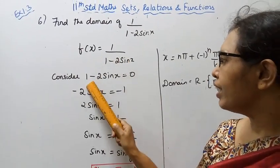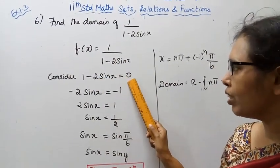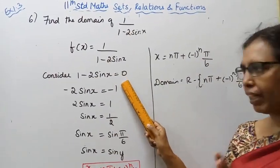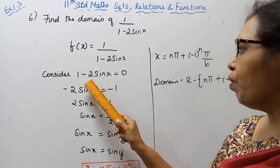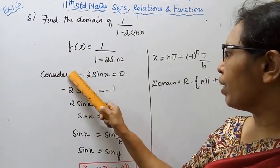For the domain, the denominator should not be zero. So we consider 1 minus 2 sin x equal to 0. Therefore, minus 2 sin x...